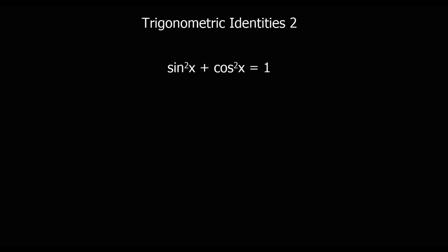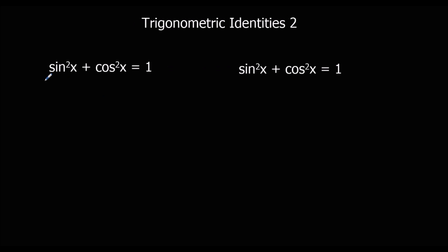Here's another identity that we should already be familiar with: sin²x + cos²x = 1. What we're going to do here is create two new identities by dividing through by sin and dividing through by cos. If we divide through by cos²x first, so each term is divided by cos²x.